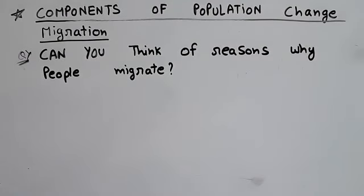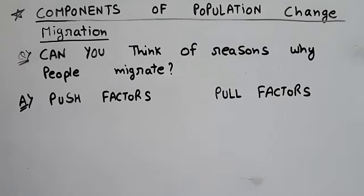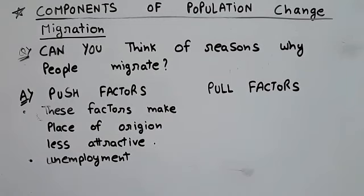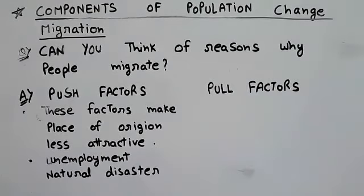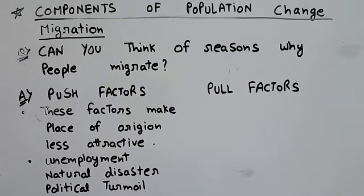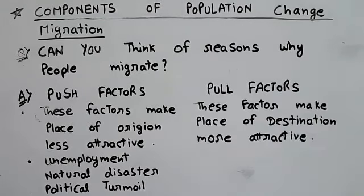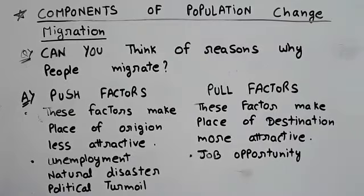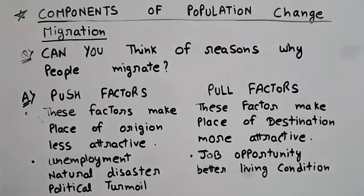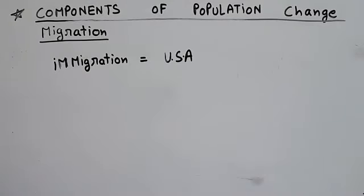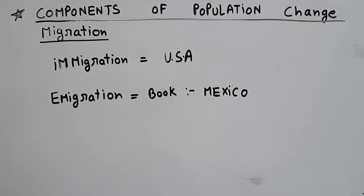NCRT asks: can you think of reasons why people migrate? There are two reasons: push factors and pull factors. Push factors make the place of origin less attractive — for example, unemployment, natural disasters like landslides and avalanches, and political turmoil like terrorism. Pull factors make the place of destination more attractive — better employment opportunities, better living conditions like hospitals and education, and peace and stability. The country with the most immigration is the USA, and the most emigration (per the book) is Mexico.